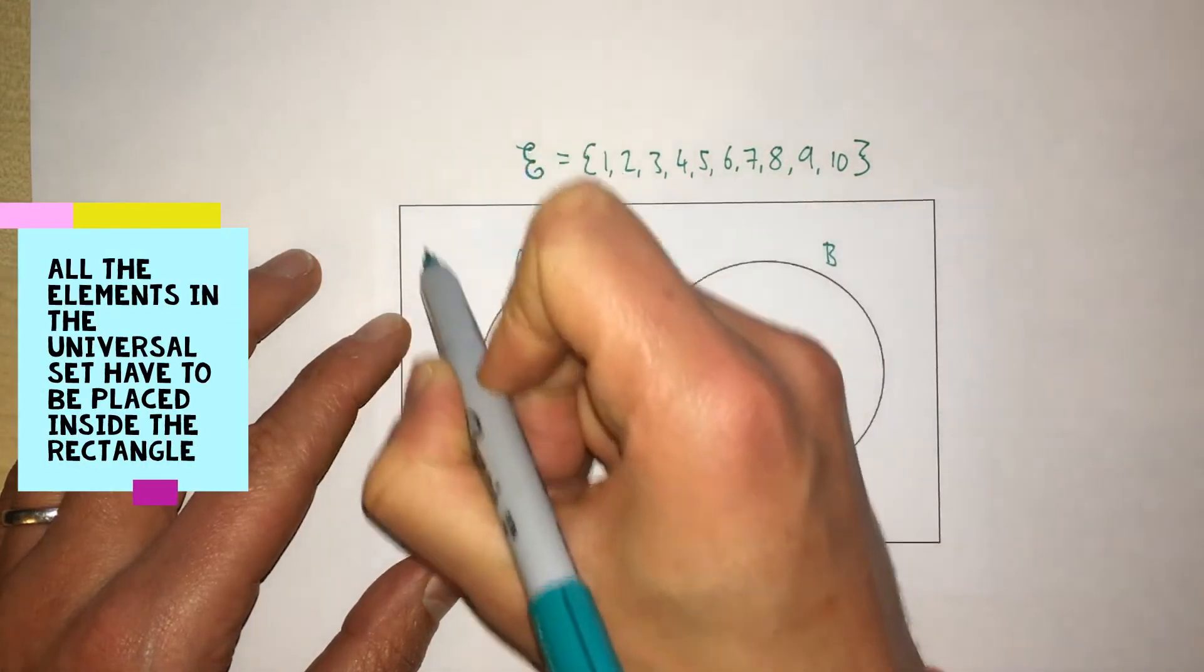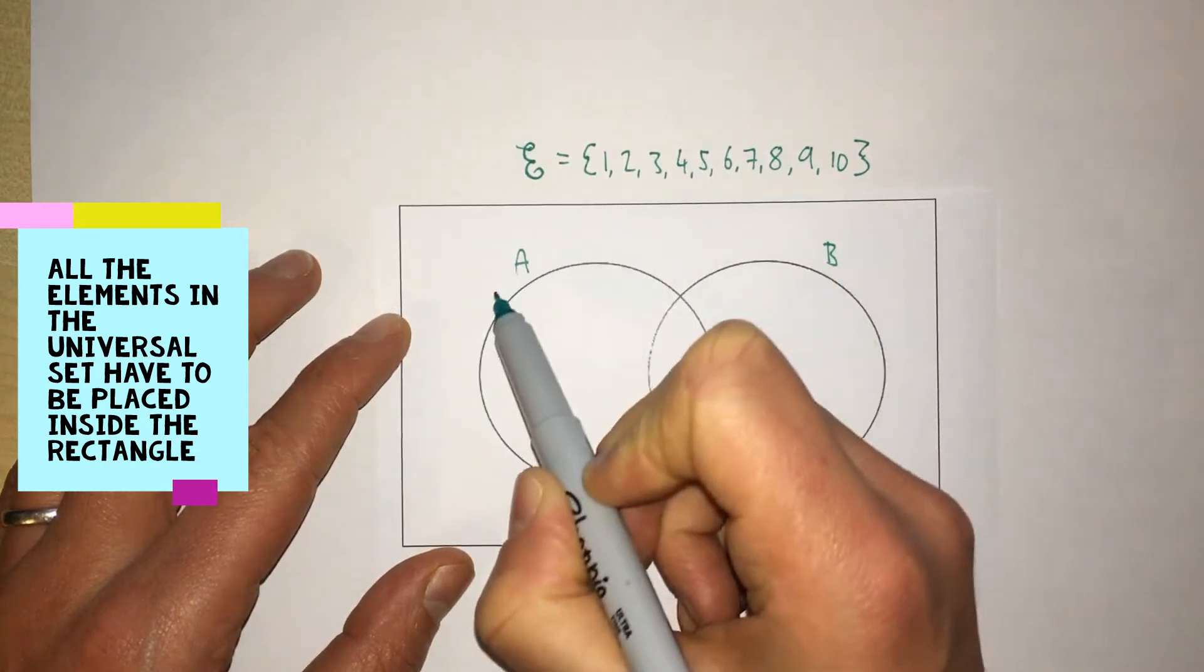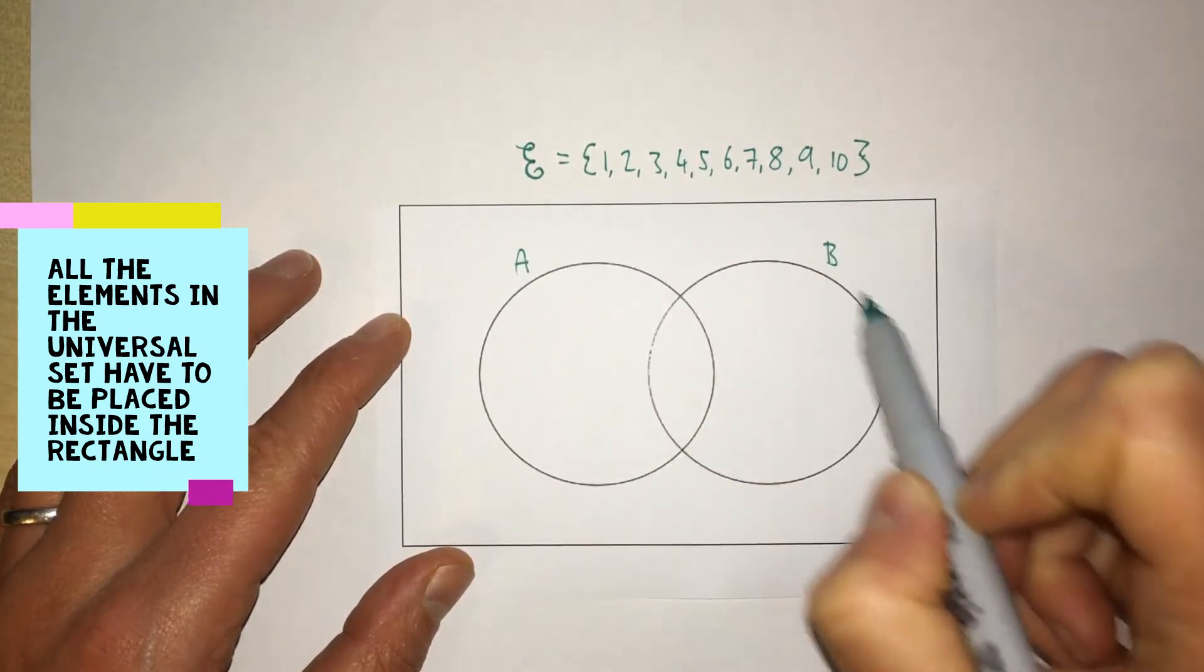All of these numbers have to be contained within the rectangle. Some of them will be in set A and some of them will be in set B.